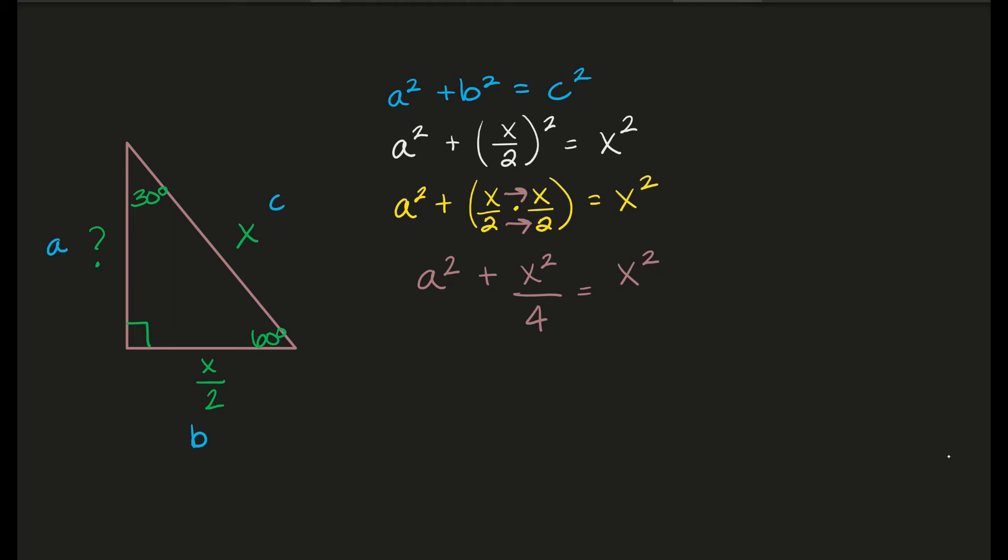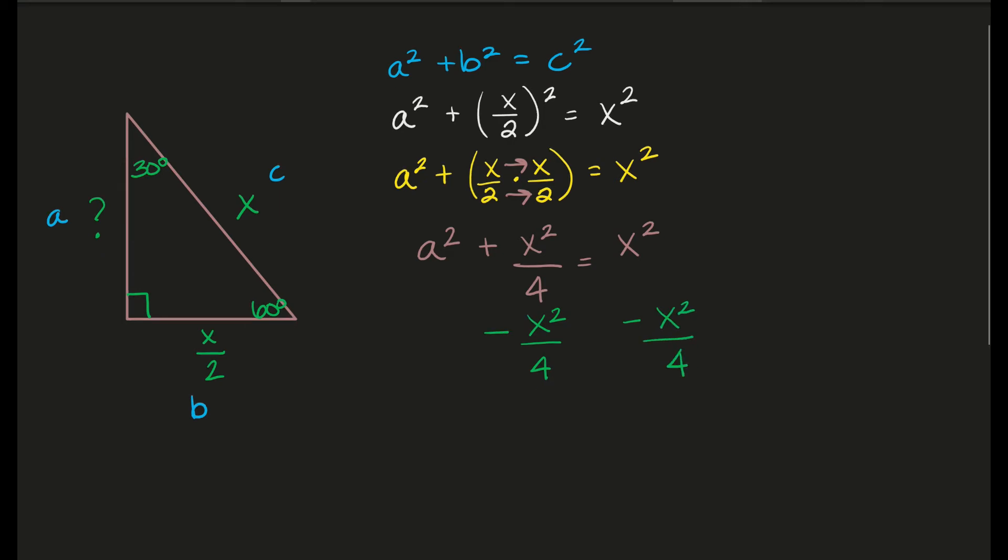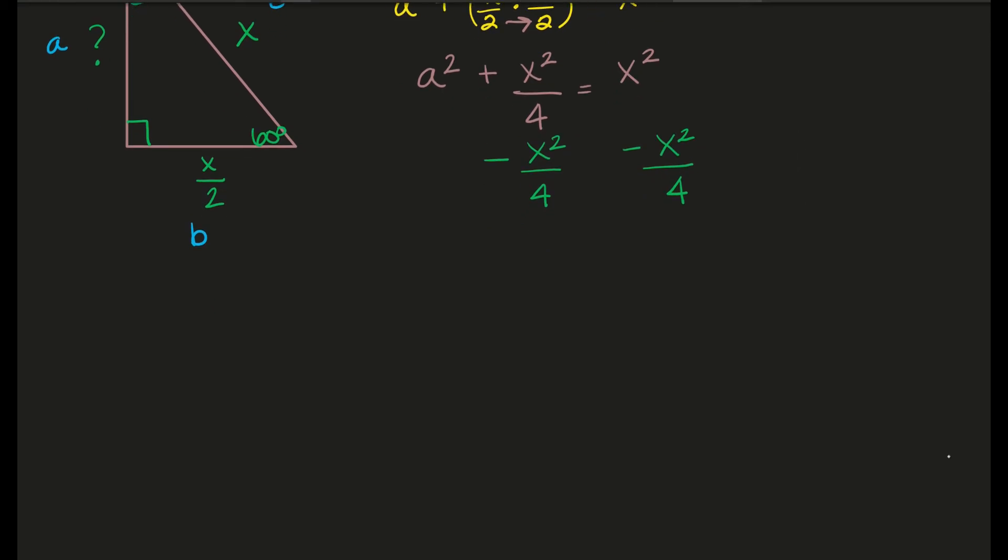Now remember, the whole point of this was to figure out what this missing leg over here was where the question mark is. So we're looking for A. So that's the variable we want to isolate. So what I'll do here is say, I need to isolate A squared. So this X squared divided by 4, this has to go. So I'll subtract X squared divided by 4 from both sides. Now what I'll do is come down here and say, so A squared should equal X squared minus X squared divided by 4.